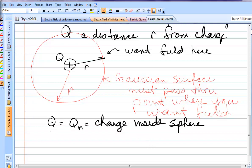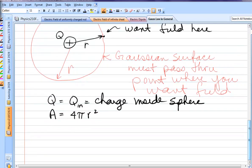Next, we need to calculate the area of the Gaussian surface. The area of a sphere, surface area of a sphere, is 4 pi r squared. It will always be that, the area of your Gaussian surface.